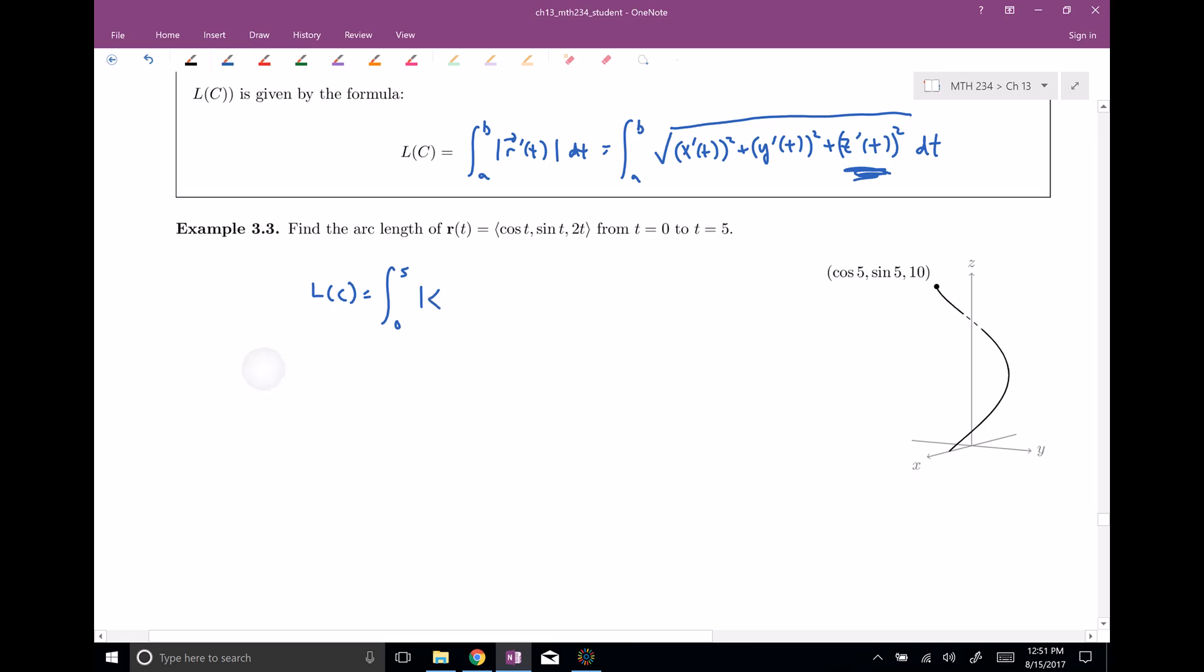So, okay, the derivative of cosine is going to be negative sine, the derivative of sine is going to be cosine, and the derivative of two t is gonna be two. So I'm gonna need to take the magnitude of this. Okay, so zero to five, and the magnitude, well, let's square each component. So I'm gonna have sine squared, because negative times negative will be positive. We have cosine squared, and then we have four, right? So I'm just squaring each component of the derivative, and then putting it all under my square root, because that's my magnitude formula. That's my length formula.